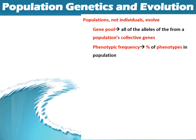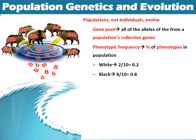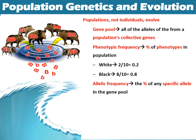A phenotypic frequency is pretty easy — we're looking at the percent of that specific phenotype. So if we had a bunch of individuals with brown hair and a few with blonde hair, we'd look at the percent with brown hair versus blonde hair. For example, two out of ten being white in color would be 20%, versus eight out of ten being darker color at 80%. The allele frequency, though, is the percentage of those specific alleles.